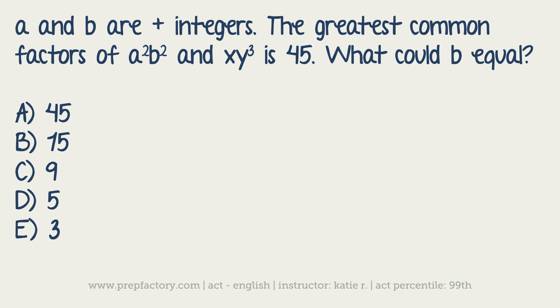Here's a particularly challenging factoring problem. a and b are positive integers. Integer, by the way, whole number. The greatest common factor of a²b² and ab³ is 45. What could b equal?